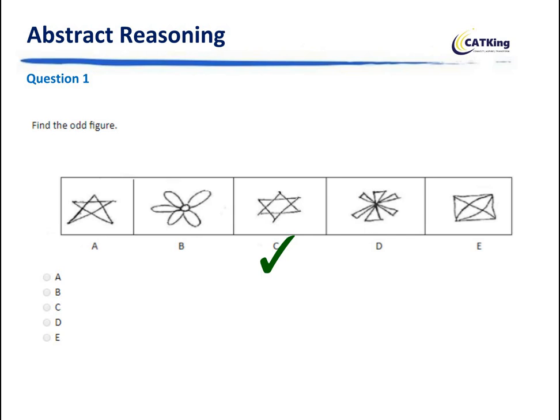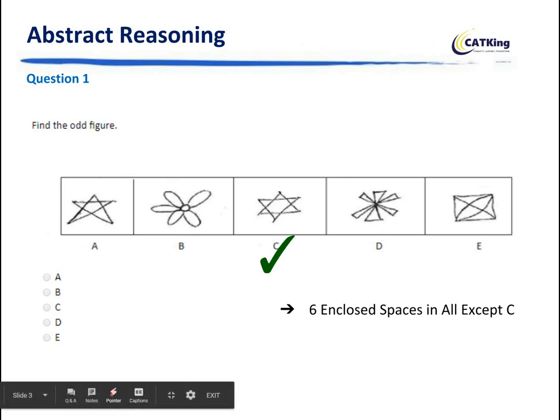So if you look at it carefully, C is going to be the answer because all the rest of them have six enclosed spaces. If you look at A, it's a star with six boxes out there. Like, if I have to look at it, I have one, two, three, four, five, six here.